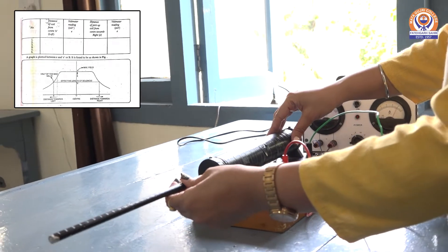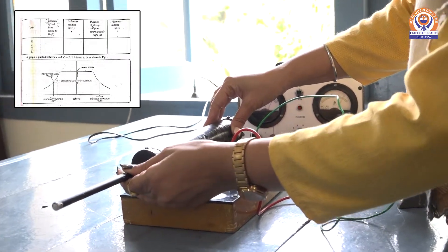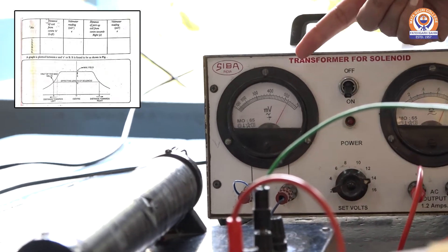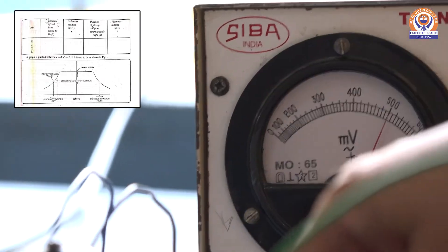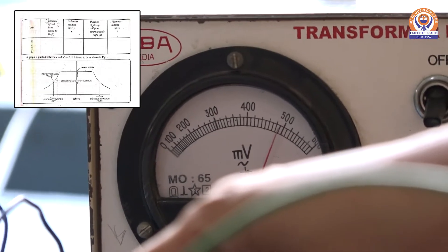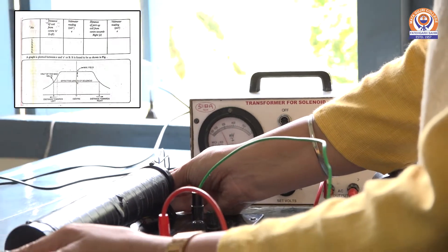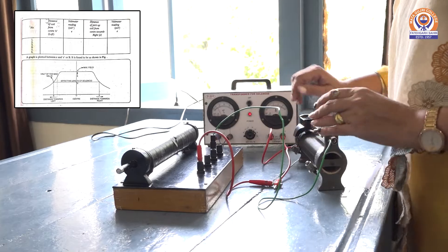Similarly, when I move this coil towards right from the center, this voltmeter reading will decrease when I move this search coil towards the right end. You can see, at the center it was 520 and at the end point, it is around 250.